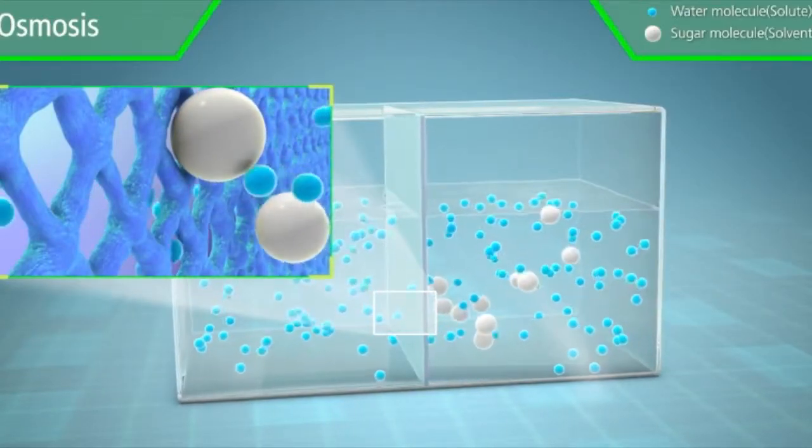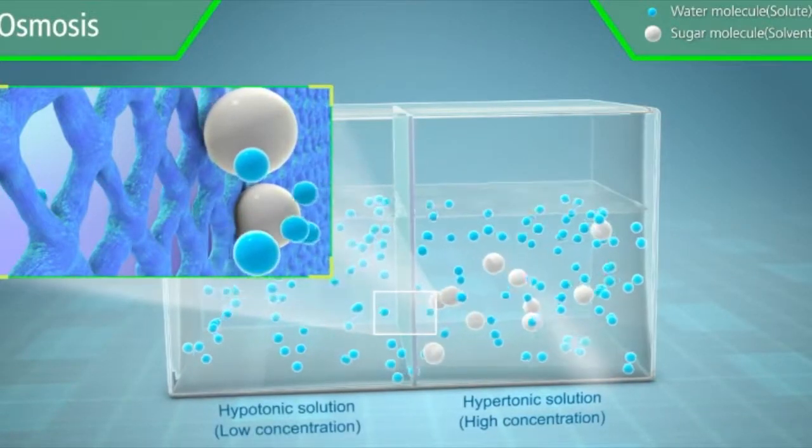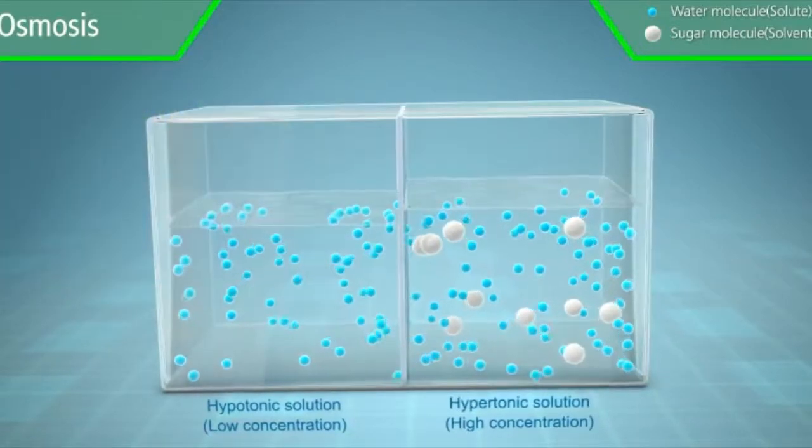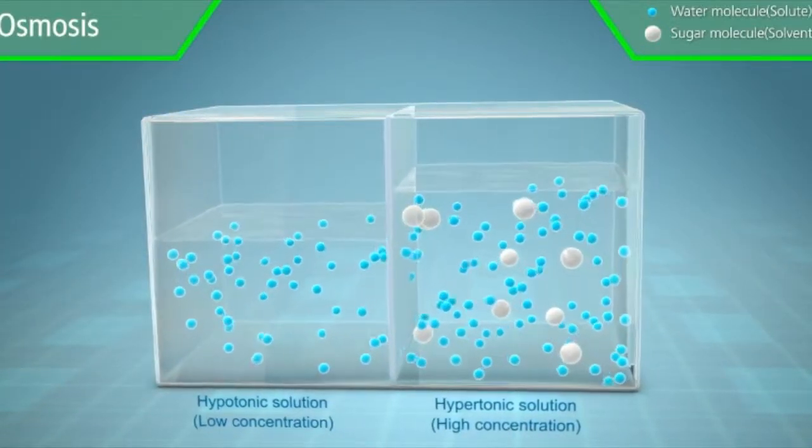Osmosis, a process by which molecules of a solvent tend to pass through a semipermeable membrane from a less concentrated solution into a more concentrated one, thus equalizing the concentrations on each side of the membrane.